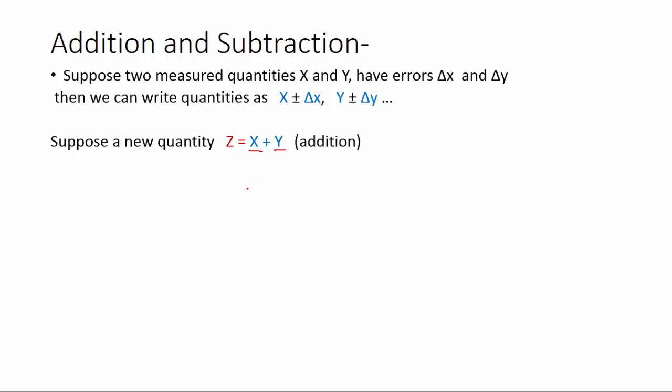Now we are calculating a new quantity z which is the addition of x and y. So we can calculate error in z by using equation delta z equals delta x plus delta y. That means error in z would equal error in x plus error in y.